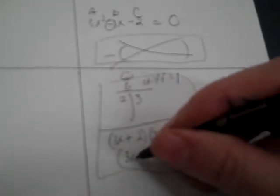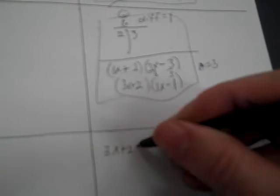A equals 3. T-chart: negative 6, difference of 1, and that's 2 and 3. So 3x plus 2 and x minus 1. Either 3x plus 2 equals 0, or x minus 1 equals 0. So 3x equals negative 2, divide by 3: x equals negative 2 thirds. And x equals 1.